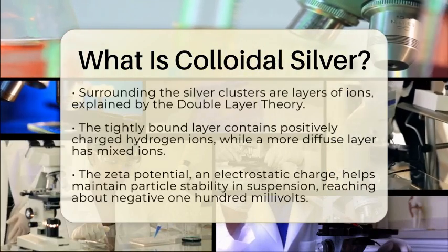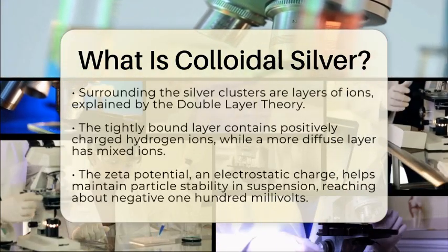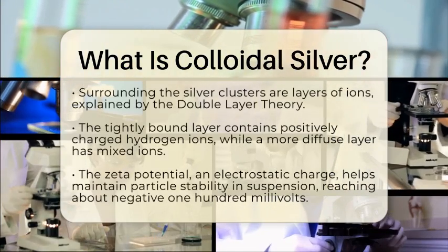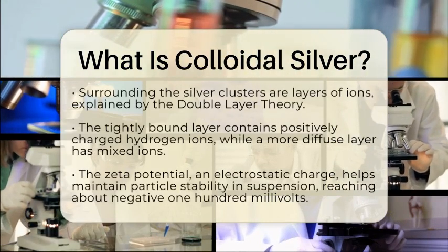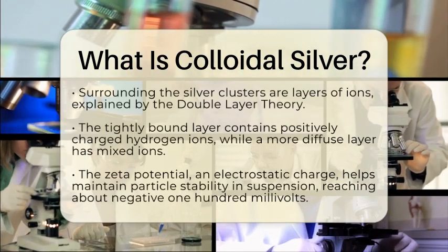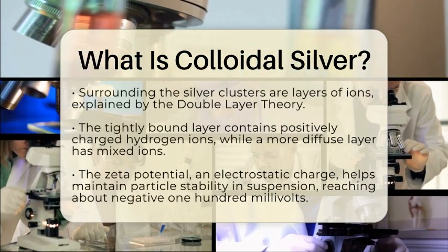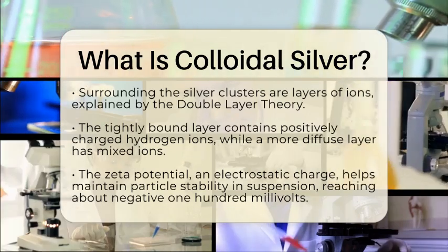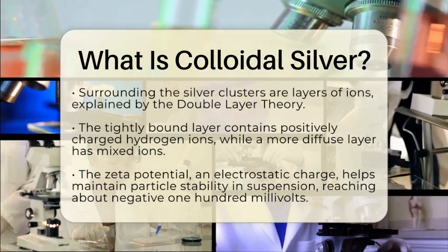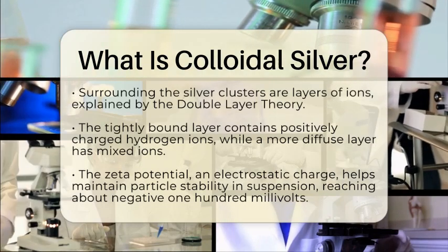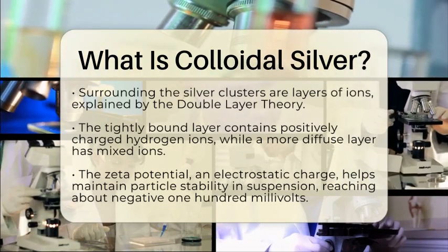Surrounding these clusters are layers of ions in the liquid. This is explained by the double layer theory, which includes a tightly bound layer of positively charged hydrogen ions and a more diffuse layer of mixed ions. Between these layers is what we call the zeta potential, an electrostatic charge that helps keep the particles stable in suspension.